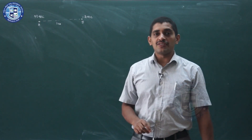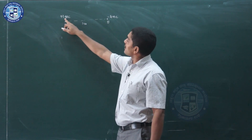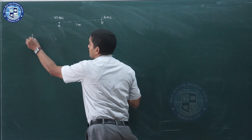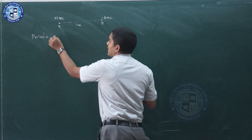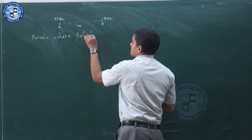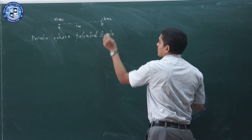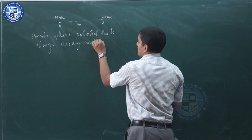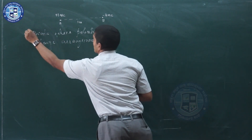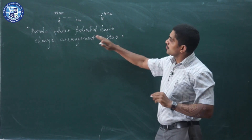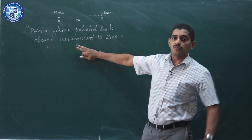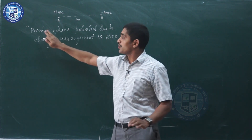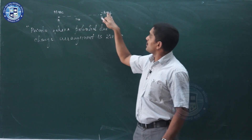Let us solve one more numerical related to potential. There is an arrangement of +1 nanocoulomb and −4 nanocoulomb charges separated by 1 meter. The question, which appeared in the 2015 board exam, asks us to find the point or points where the potential due to this charge arrangement is zero. There may be one point or two points.